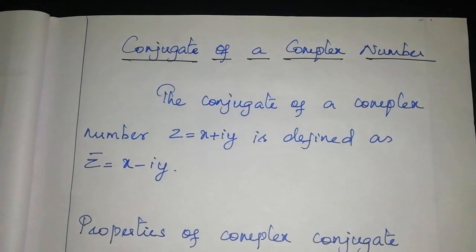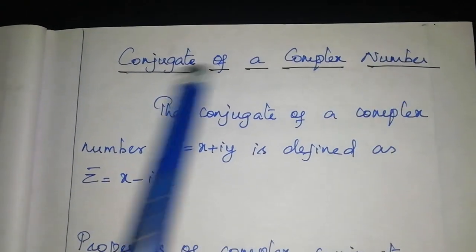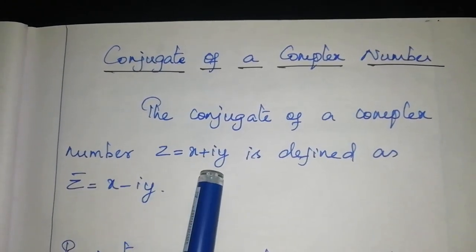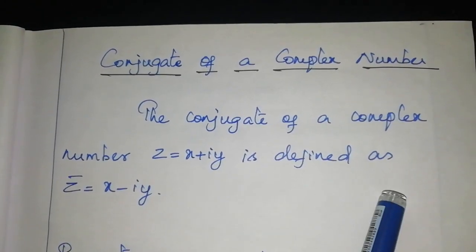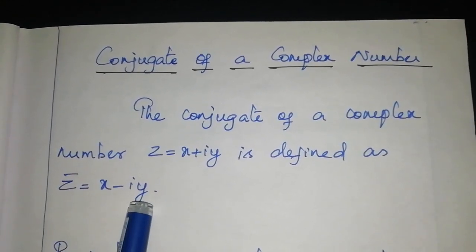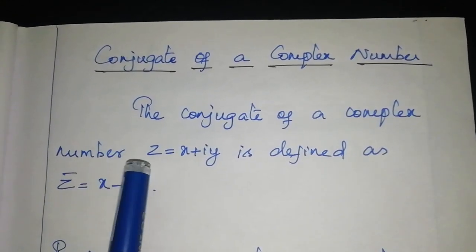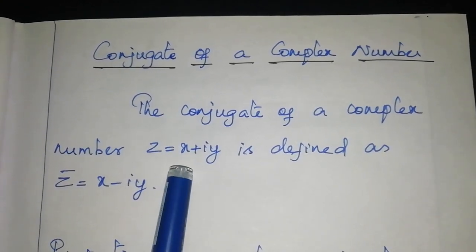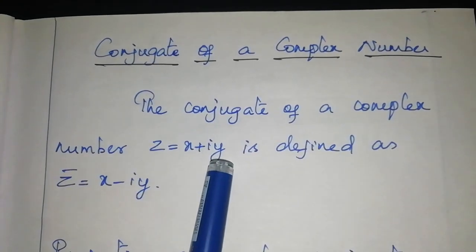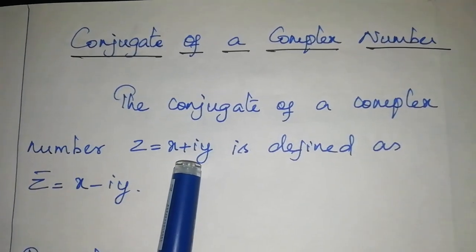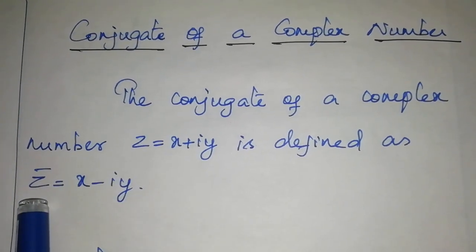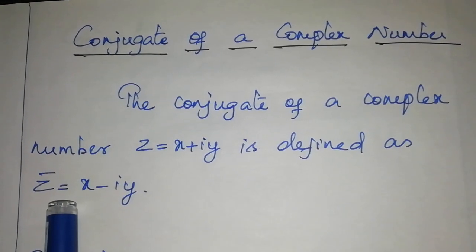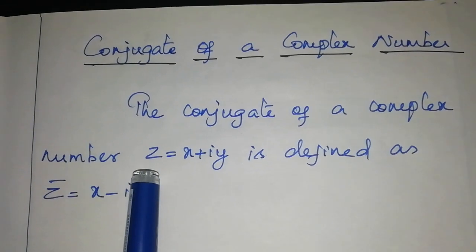Now we are going to see about the conjugate of a complex number. The conjugate of a complex number z equal to x plus iy is defined as z bar equal to x minus iy. In z equal to x plus iy, x is the real part, y is the imaginary part, and i is the imaginary unit. The conjugate z bar is obtained by changing the sign of the imaginary part of the complex number z.